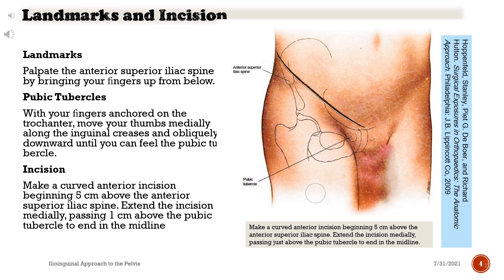Landmarks and incision: Palpate the anterior superior iliac spine by bringing your fingers up from below. Locate the pubic tubercles with your fingers anchored on the trochanter, then move your thumbs medially along the inguinal creases and obliquely downward until you can feel the pubic tubercle. Make a curved anterior incision beginning 5 centimeters above the anterior superior iliac spine, extending medially passing 1 centimeter above the pubic tubercle to end in the midline.